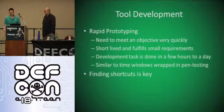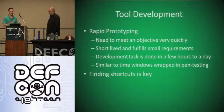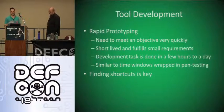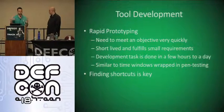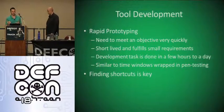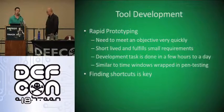With rapid prototyping you need to meet an objective quickly. It's often short-lived, timebox development. The idea is to find a task that will only take a couple hours or maybe a day and use that as a primary milestone. From there you try to identify as many shortcuts as possible — taking in open source software, looking for documentation, and things along those lines.